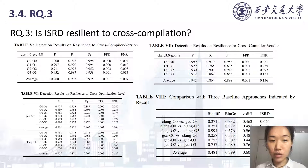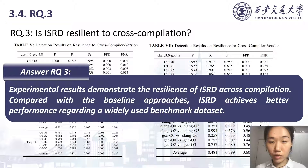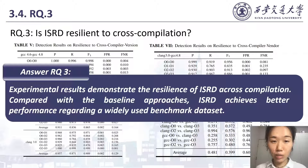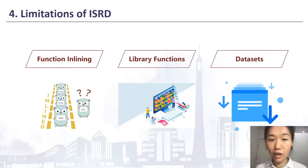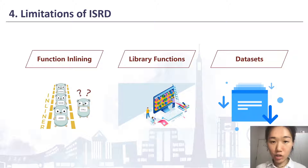ISRD achieves better performance on a widely used benchmark dataset, showing resilience to cross-compilation and outperforming baseline approaches. However, function inlining leads to a partial semantics problem and is a major internal limitation of ISRD, as anchor recognition based on identical library calls will fail across this issue. Additionally, due to the difficulty of collecting partial reuse samples with accurate labels, only 24 programs were selected for dataset 1 and 74 real partial reuses were manually labeled. We leave these limitations as future work.